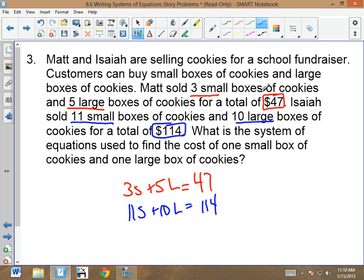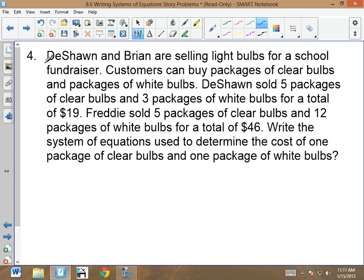So we break out our totals and then put what it equals or put what you add together to get to your totals. I add three small plus five large to get $47. That's it. Go ahead and do number four.